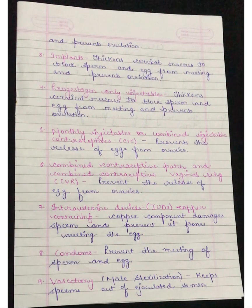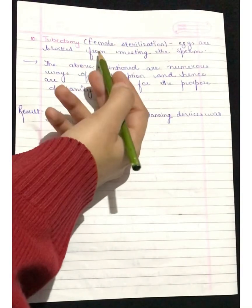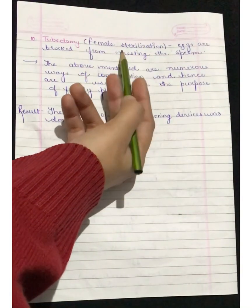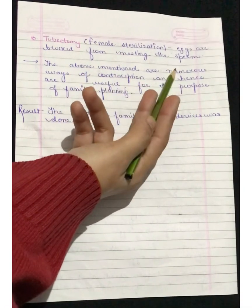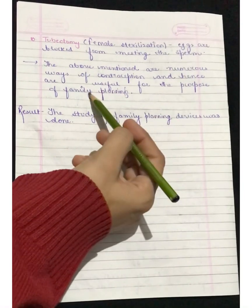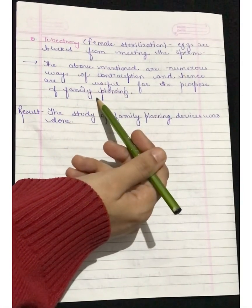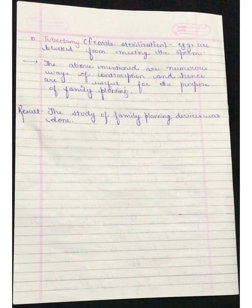Next is vasectomy — that is male sterilization — a surgical procedure that keeps sperms out of ejaculated semen. Next is tubectomy — that is female sterilization — also a surgical procedure in which eggs are blocked from meeting the sperm. The above-mentioned are numerous ways of contraception and hence are useful for the purpose of family planning.